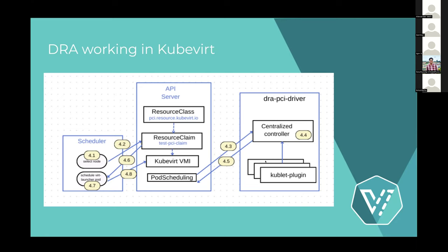What does the kubelet plugin do? The centralized controller handles communication with the scheduler via the pod scheduling context. The kubelet plugin's role is to advertise the devices present on the node. It is a daemon set running on every node, picking up PCI devices and advertising them to the centralized controller, which then includes them in a resource claim.